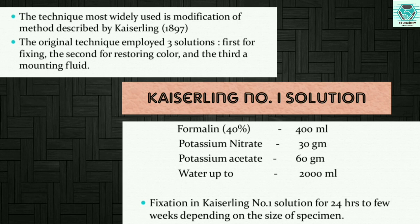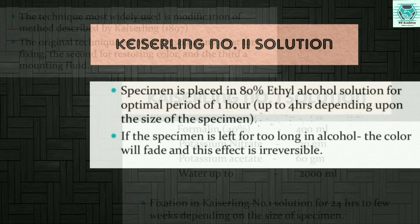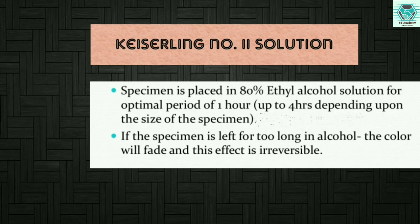Kaiserling number two solution: specimens are placed in 80% ethyl alcohol solution for an optimal period of one hour, and it may be up to four hours depending on the size of the specimen. If the specimen is left for too long in alcohol, the color will fade and this effect is irreversible.